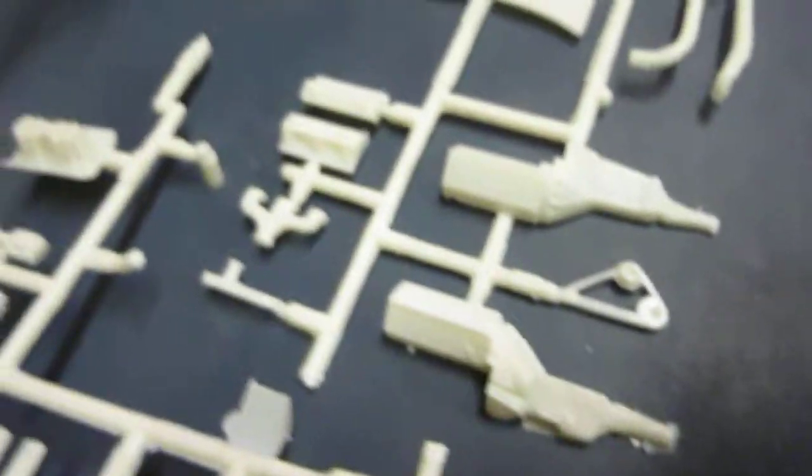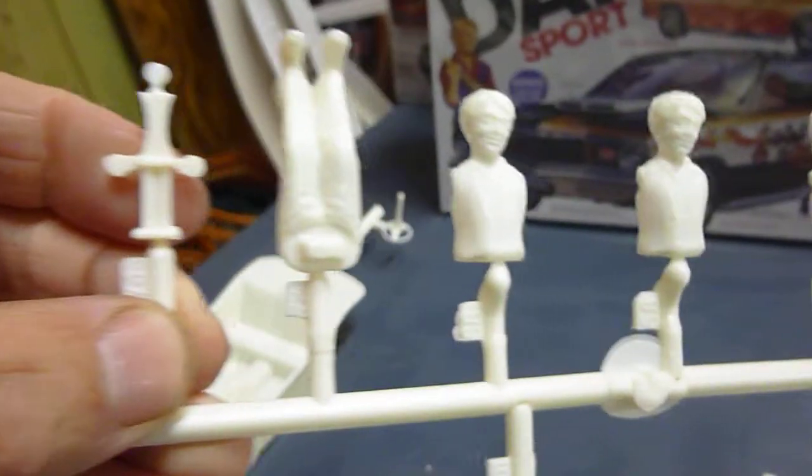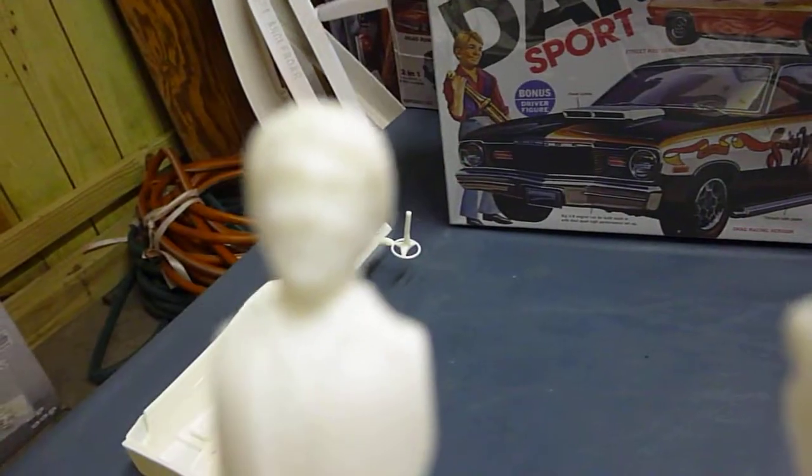And of course, you get two figures, a driving one and a standing one, so you can use that for your diorama. Their arms and legs, their body, of course.